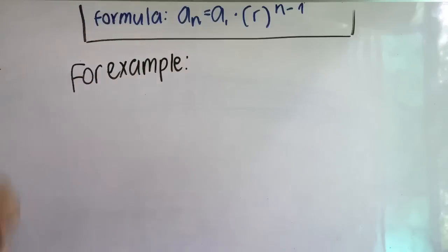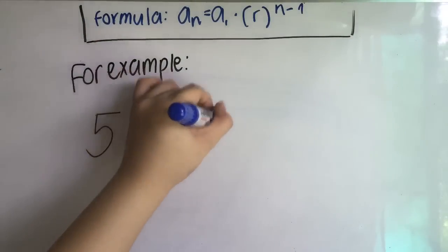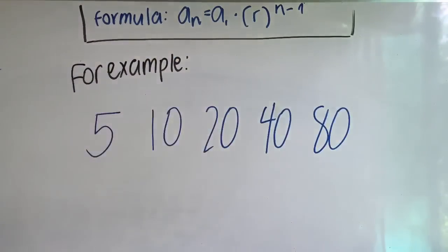Here is an example of a geometric sequence: 5, 10, 20, 40, 80.